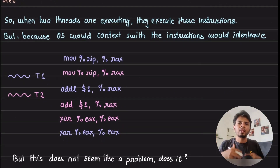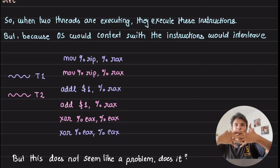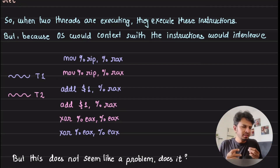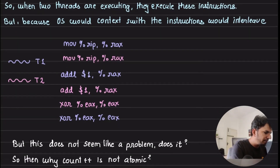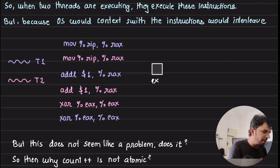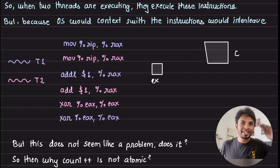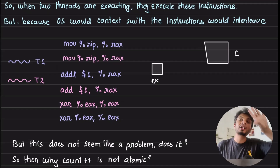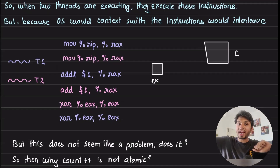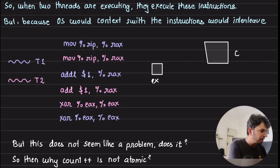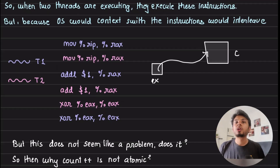Now when we run these as two threads at the same time, what worst could happen? These instructions would interleave among themselves. Let's see if that leads to an inconsistent state. We have a register called rax and a global variable called count stored in memory.